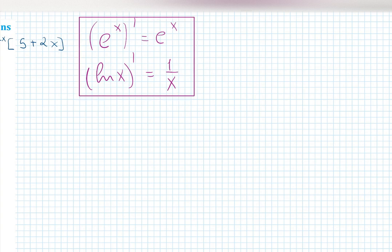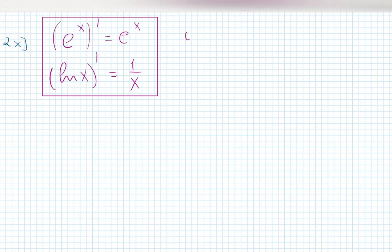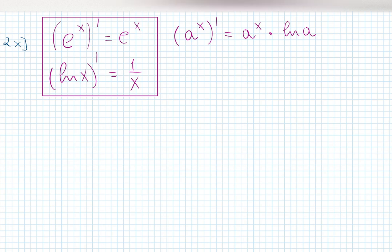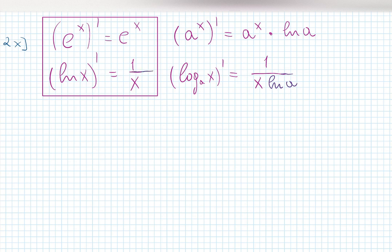What if it's not the natural exponent or natural log? The derivative of a to the x still begins by copying the exponential function, then multiplying by the natural log of the base a. That's why with e to the x we have natural log of base e, but natural log of base e is 1. For log base a of x, the derivative is 1 over x times 1 over the natural log of the base a — same idea, since here natural log of e is 1.